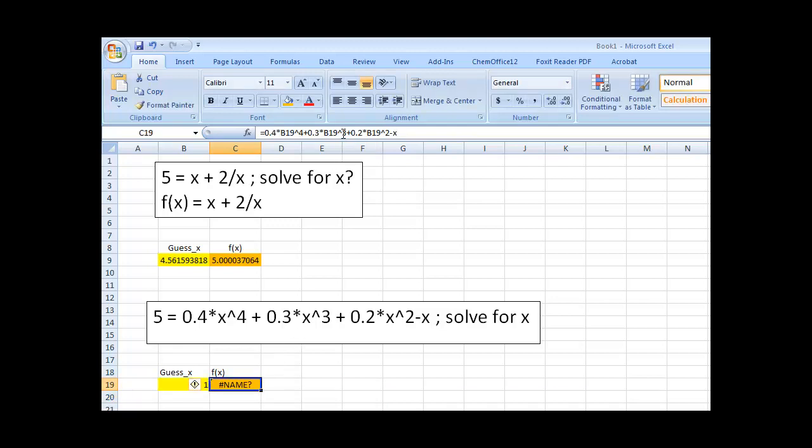And I have an error here. That's great. 0.4 times b19 to the 3rd power. 0.3. Ah, minus b19. If your formula is not right, you're not going to get the right problem. Got to check those formulas. Alright. So, there we have it.